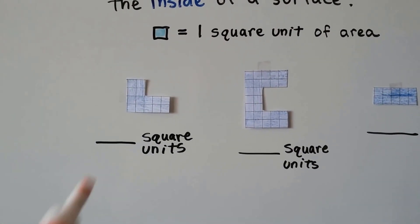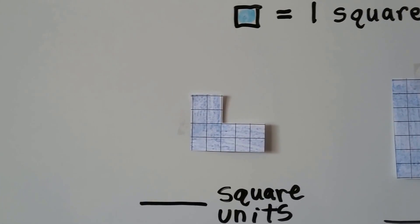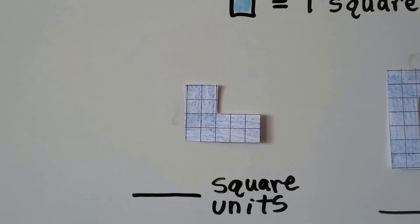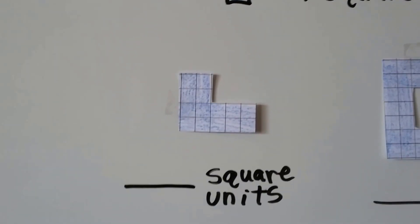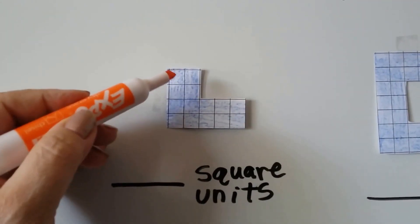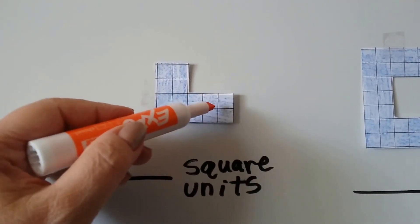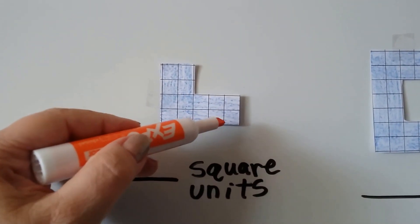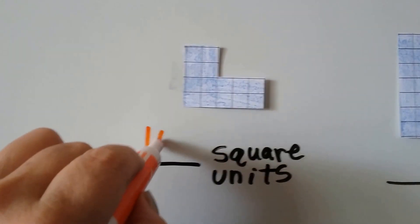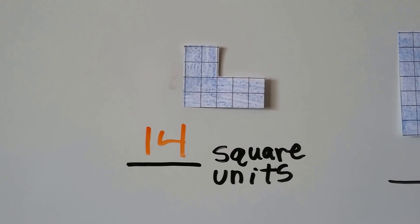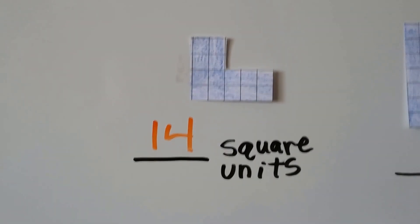So how many square units are here in this one? We need to count the squares. Before we were just counting lines around the outside for the perimeter — now we're counting the squares we see. I see 1, 2, 3, 4, 5, 6, 7, 8, 9, 10, 11, 12, 13, 14 squares. So it's 14 square units. We're not going around the outside edge like a fence anymore — we're counting what's on the inside. That's the area.